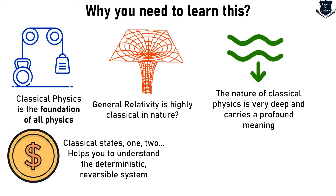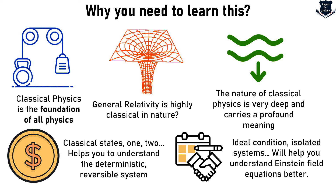What do I mean by that profound meaning? It means classical states — one state, two states, multiple states, infinite states — which helps you define and determine what is called a deterministic, reversible system. This is very deep and profound, and it will give you strong footholds to understand general relativity. Ideal conditions and isolated systems are also important — for example, when learning about the Schwarzschild black hole or when taking assumptions to simplify the Einstein field equations.